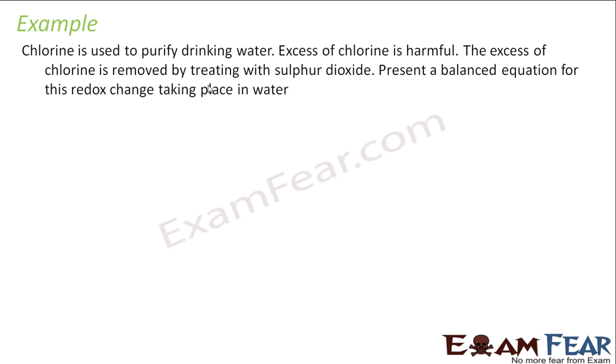So the question says, chlorine is used to purify drinking water, but excess of chlorine is harmful. And the excess of chlorine is removed by treating with sulfur dioxide. And you have to find the balanced equation for this. So the question says, chlorine is removed using sulfur dioxide. And water is also there in this because we are clearing water. So this gives Cl- plus SO4 2-. And we have to write a balanced reaction for this.